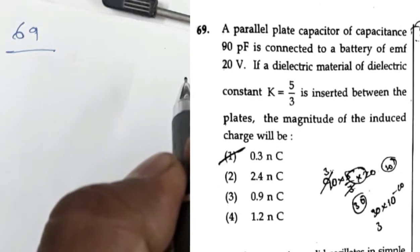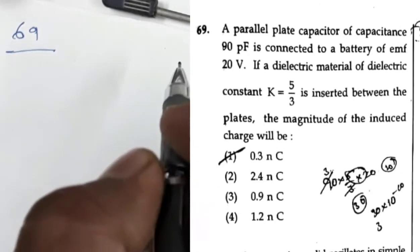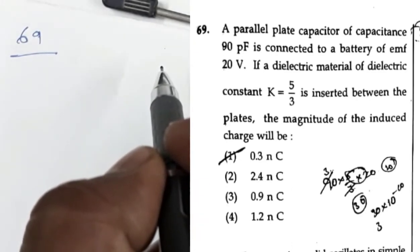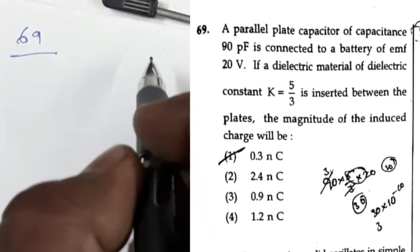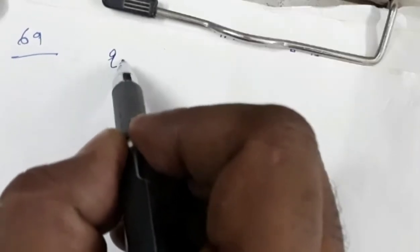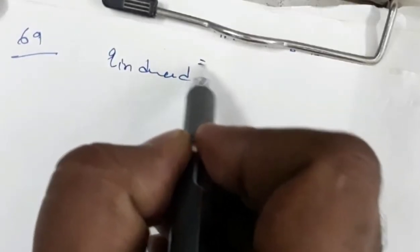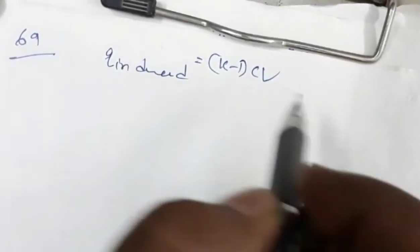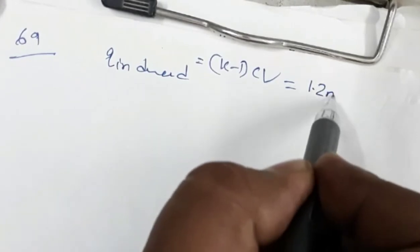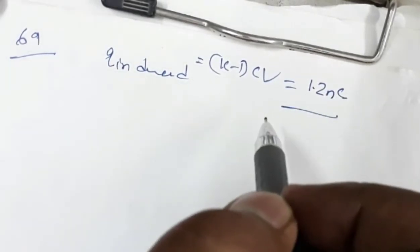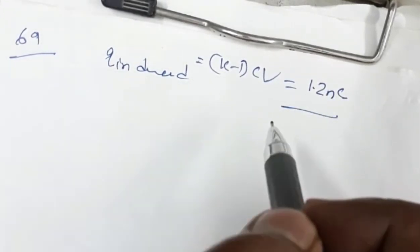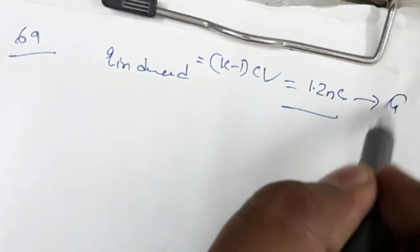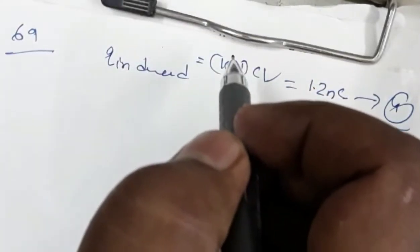Question number 69 is a formula-based question asking to calculate the magnitude of induced charge. Using the formula Q_induced = (k-1)·CV and substituting the values, this comes out to be 1.2 nanocoulombs. For question number 69, the correct answer is option 4.